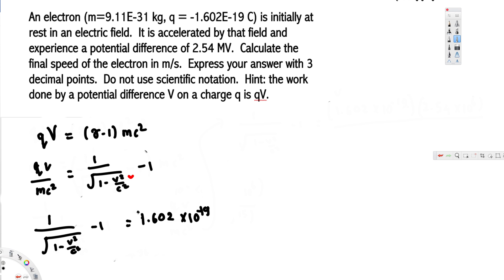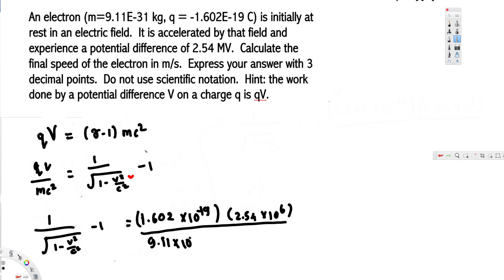We multiply by the voltage: 2.54 mega volts, where mega is 10 to the power of 6. This is divided by the mass of the electron, 9.11 times 10 to the power of minus 31, times the speed of light squared — which is 3 times 10 to the power of 8, squared, giving 9 times 10 to the power of 16. Now we have all the values.